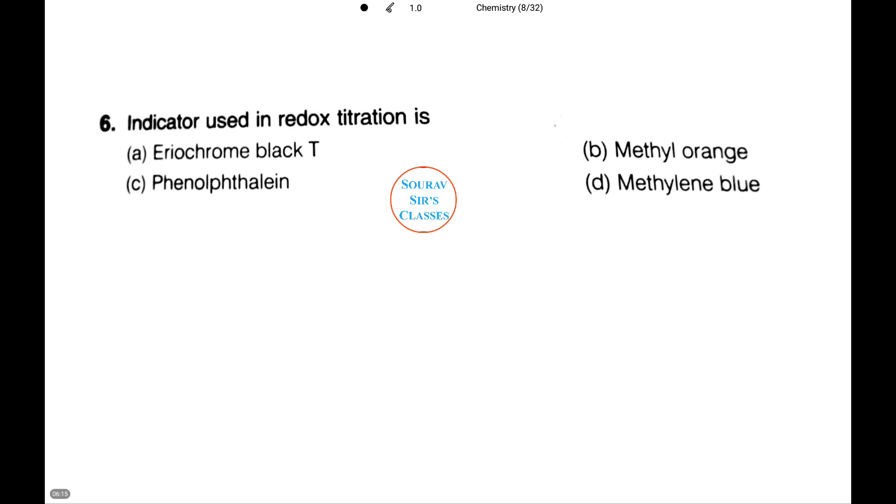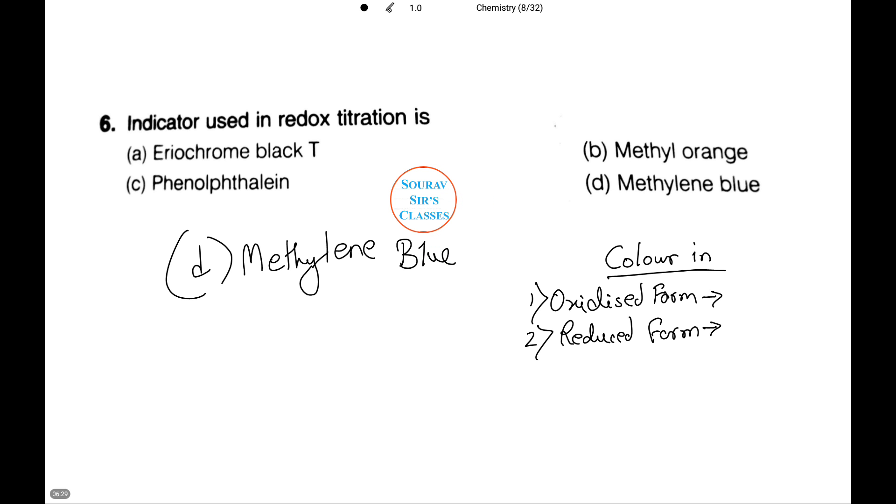Let's see another simple question. Among the following, which indicator is used in redox titration? The answer is D, methylene blue. This is because methylene blue is a pH-dependent redox titration indicator. The color in the oxidized form is blue, and in the reduced form it's colorless.